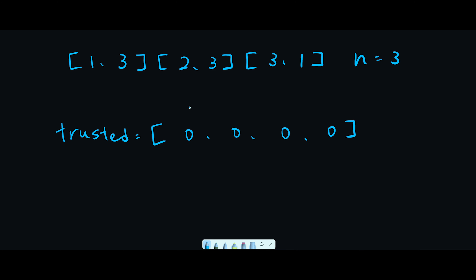Let's count the trusted number. Looking at index 1 in each element, we have 3, so that's why we get plus 1 to 3. And again we find a 3, so that's 2. And we find 1, so we get 1. Condition 2 says everybody except the town judge trusts the town judge, so one of the people is the town judge. That means if somebody gets 2 trusts, that is the answer - in this case person 3 has 2 trusts, so we should return 3.